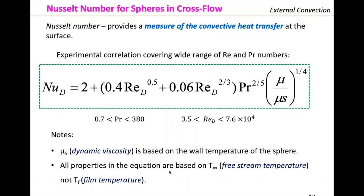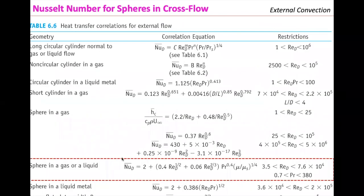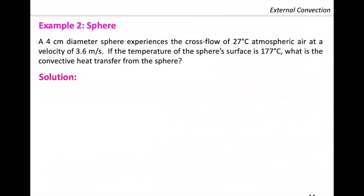An important feature about this equation is that the dynamic viscosity μ_S is based on the wall temperature of the sphere. Also, all the properties in the equation are based on the free stream temperature, not the film temperature. Those are the characteristics of this equation you need to have in mind, especially when reading properties from the back of your book. So let's solve a sphere problem using this equation.